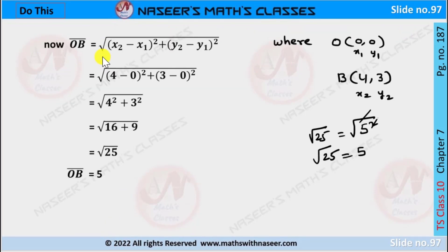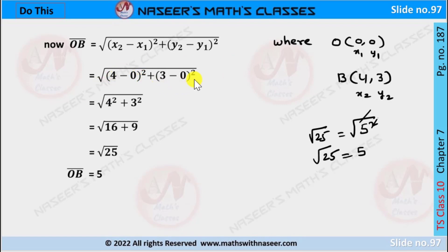Next we find the length of OB. Let O coordinates (0,0) be x1,y1 and B coordinates (4,3) be x2,y2. We substitute these values in the distance formula and write it as the square root of (4 minus 0) squared plus (3 minus 0) squared. Here 4 minus 0 is 4 and 3 minus 0 is 3.